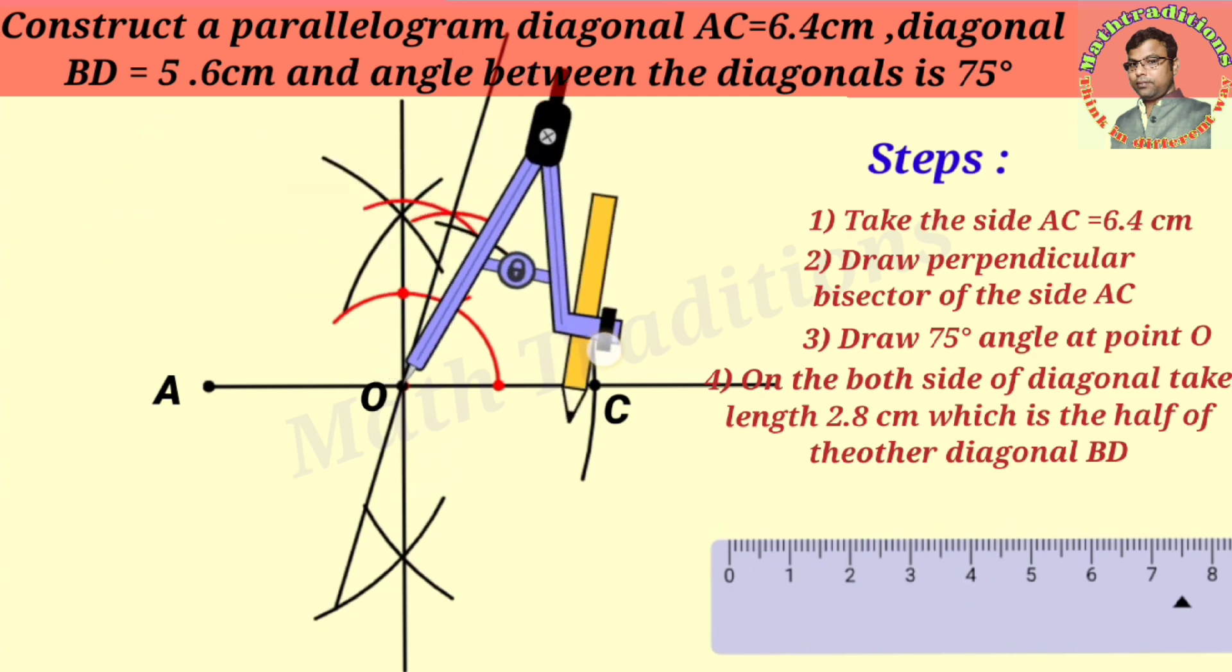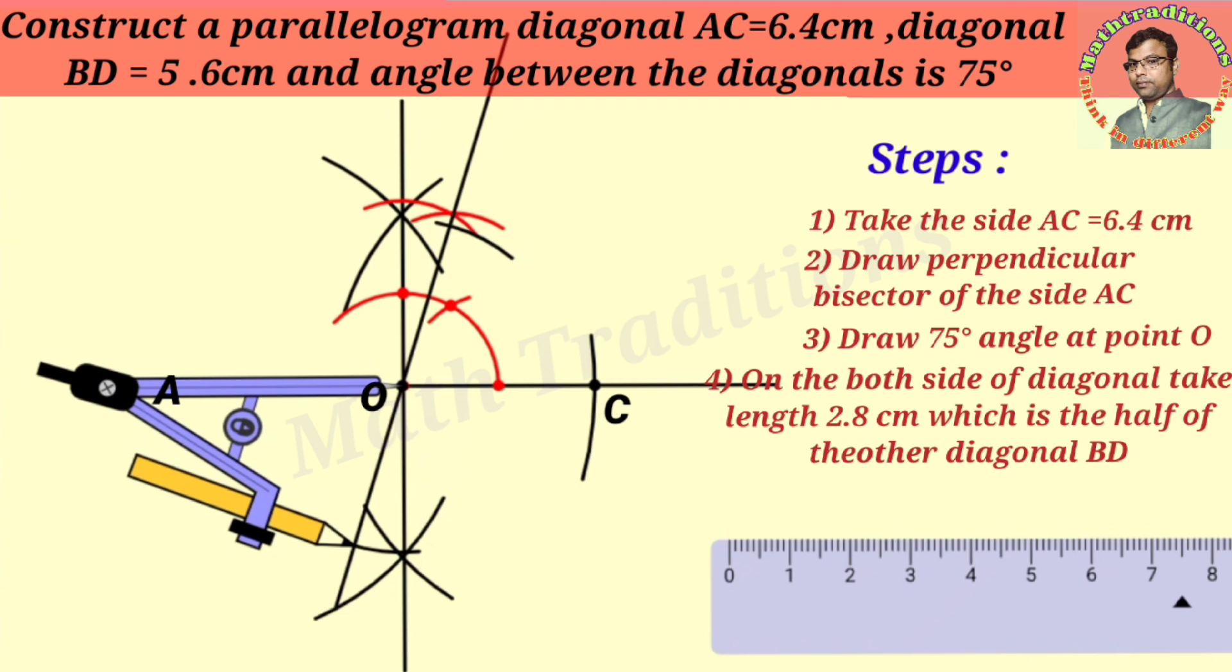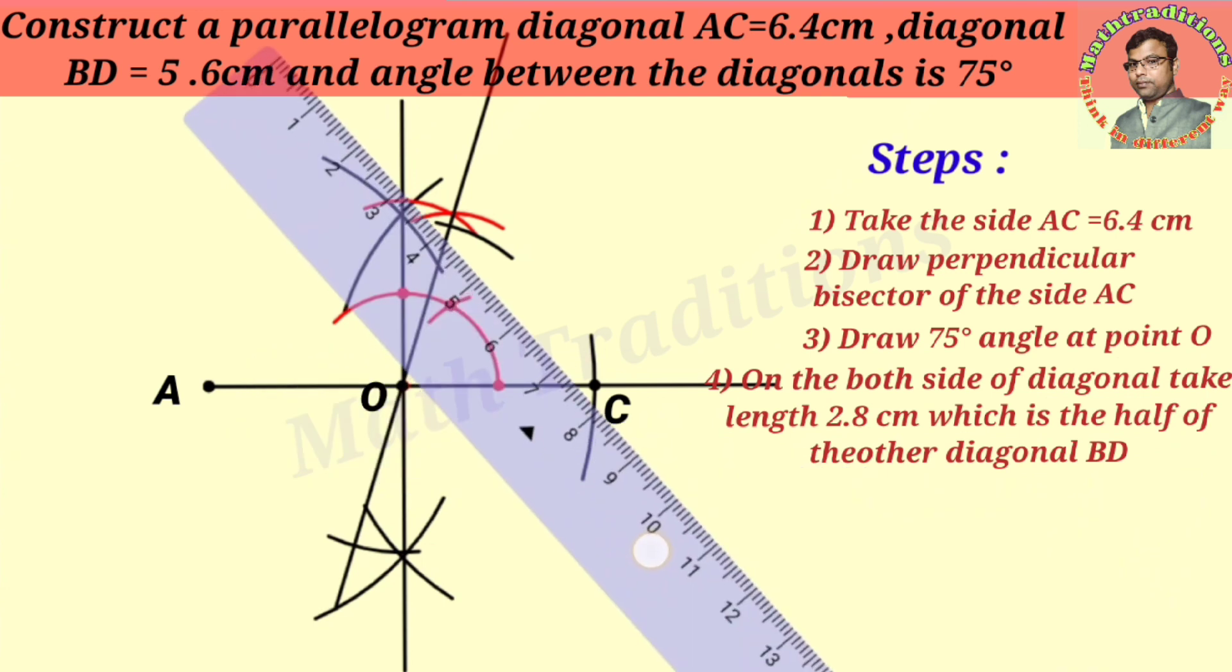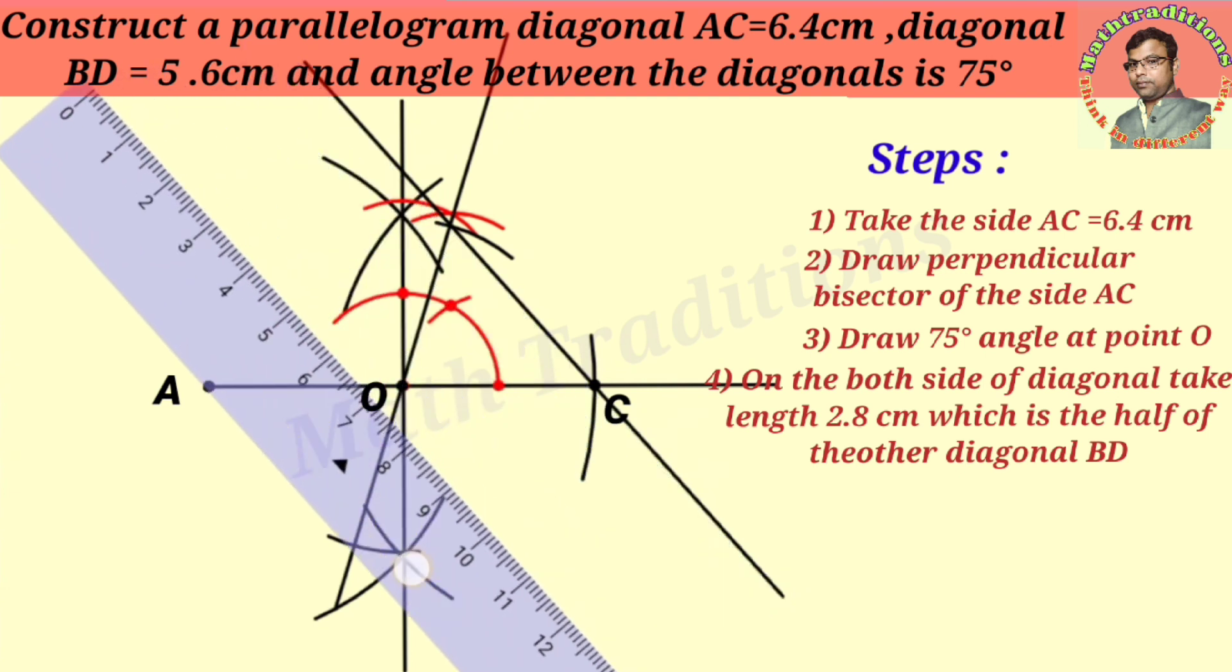After marking this length on both sides, we will get the other two vertices of the parallelogram. Now we have obtained all four vertices. We will join the vertices to get our required parallelogram.